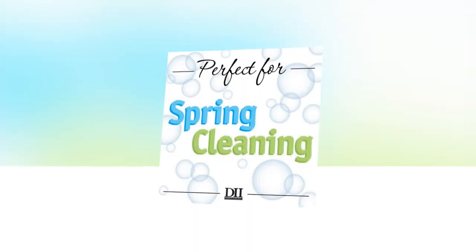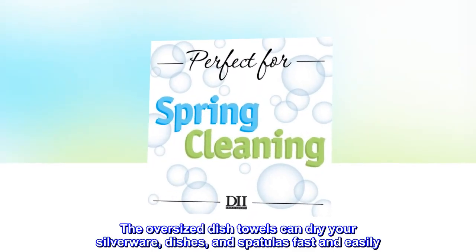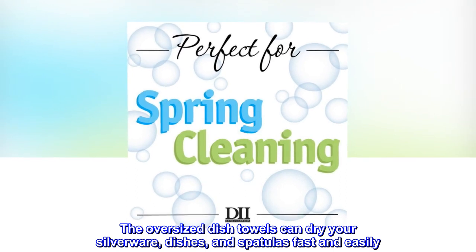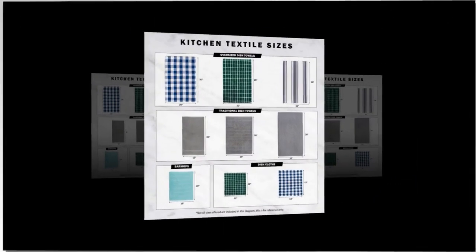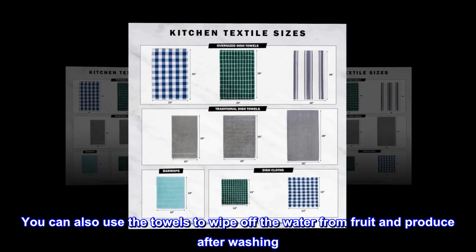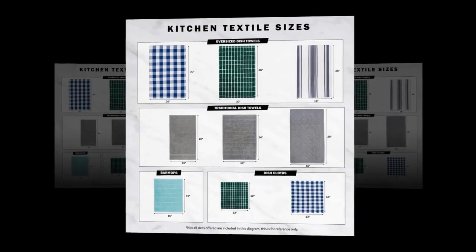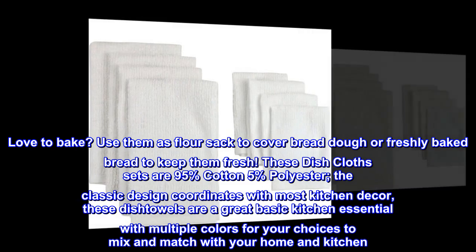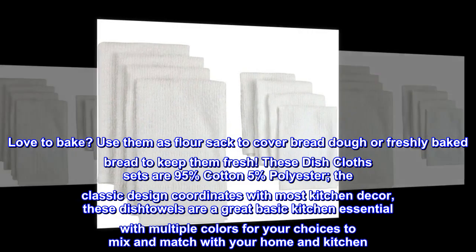The oversized dish towels can dry your silverware, dishes, and spatulas fast and easily. You can also use the towels to wipe off the water from fruit and produce after washing. Love to bake? Use them as flour sack to cover bread dough or freshly baked bread to keep them fresh.